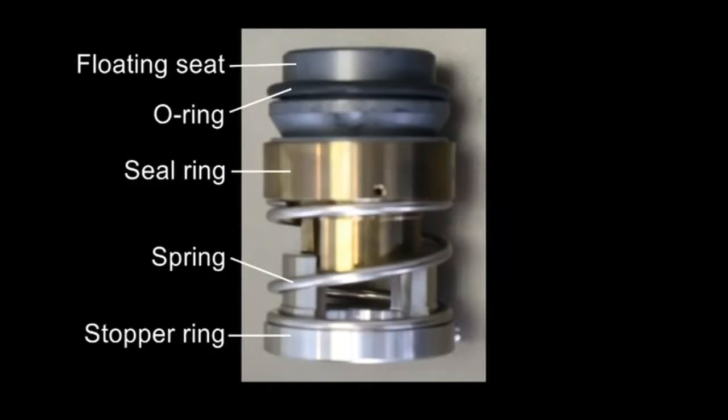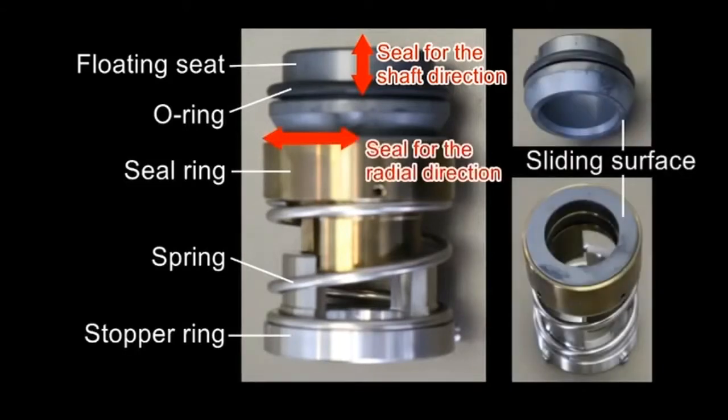The mechanical seal keeps air tightness by a combination of sealing in the shaft direction by the shaft fixed O-ring and sealing in the radial direction by the sliding of the seal ring and floating seat.